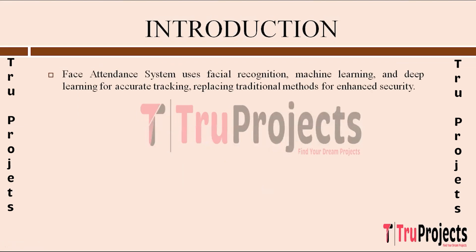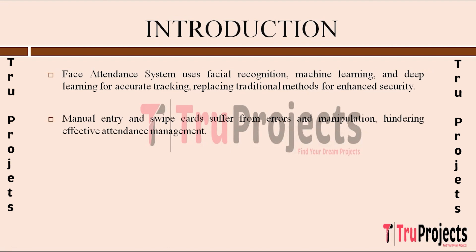The Face Attendance System is a cutting-edge solution revolutionizing attendance tracking by employing facial recognition technology bolstered by machine learning and deep learning algorithms. By utilizing these advanced technologies, the system can accurately identify individuals based on their unique facial features, offering a more secure and efficient alternative to traditional methods. Traditional attendance tracking methods like manual entry and swipe cards present several limitations — manual entry systems are prone to human error, swipe card systems can be easily manipulated, both require extensive administrative effort, and offer limited real-time tracking capabilities.